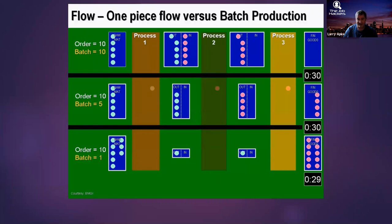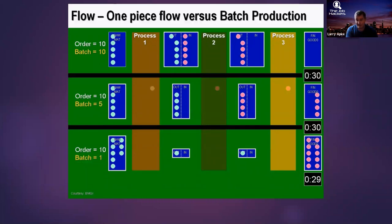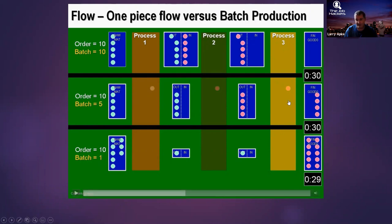Most people batch things intuitively. I used to do this exercise with stuffing envelopes — we fold all the papers first in big batches, then stuff all the envelopes, then address them, then put the stamps on. We intuitively think that's going to get us there faster, or that it doesn't make a difference. What I'm showing here is it makes a real big difference — in the one-piece flow condition, I've delivered all 10 widgets, versus the other conditions where nothing has been delivered yet.